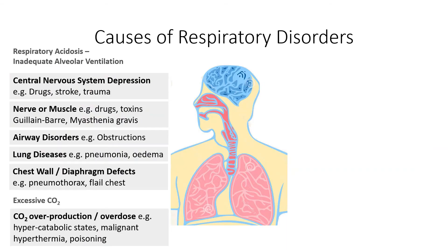These are the common causes of respiratory disorders. In respiratory acidosis, it is quite often due to inadequate alveolar ventilation — any process that suppresses respiration. This can be due to central nervous system depression from drugs, trauma, or stroke; nerve or muscular disorders; airway obstruction; lung diseases such as pneumonia or pulmonary edema; chest wall or diaphragmatic defects. Sometimes it could be due to excessive CO2 production, for example in hypercatabolic states, malignant hyperthermia, or some forms of poisoning.